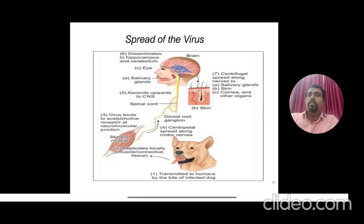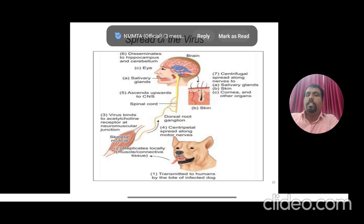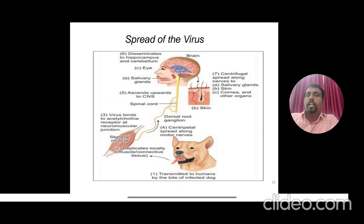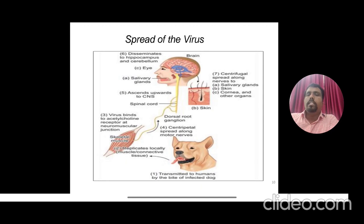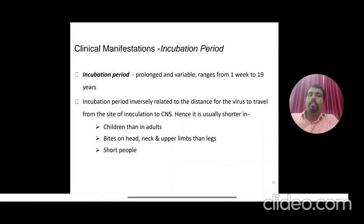The diagram demonstrates how the virus is transmitted. The dog carries the virus in its saliva; once it bites, the virus replicates in skeletal muscle. Then the virus binds to acetylcholine receptors at the neuromuscular junction and enters the nervous system. It slowly travels to the central nervous system — the brain and spinal cord — where it multiplies, ascends upwards, reaches the brain, and disseminates to the hippocampus, cerebellum, and eyes.